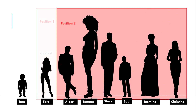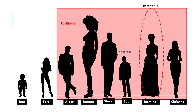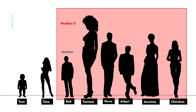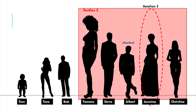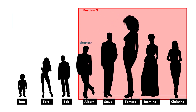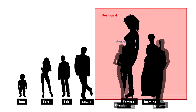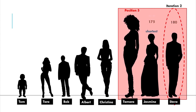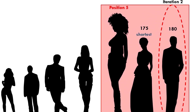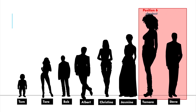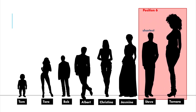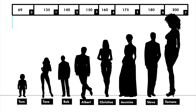Moving on, the search space is from position 2 to position 7. We do five iterations to find the shortest person in our search space — Bob. We swap Bob and Albert. Bob reaches position 2 as he is the third shortest person. Starting at position 3, we find Albert to be the shortest in four iterations. We move Albert to position 3, swapping with Tamara. At position 4, we conduct three iterations to find the next shortest person, Christina. Then at position 5, we do two iterations — Jasmine, whose height is 175 cm, is the shortest and gets placed in position 5. Finally, at position 6, we just need one iteration to find that Steve belongs to position 6 and Tamara belongs to position 7. This way, we have sorted 8 people according to their height.